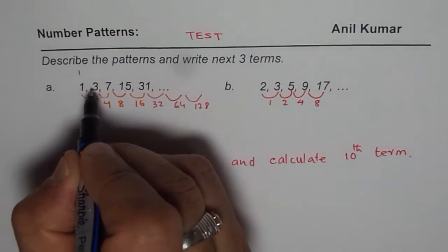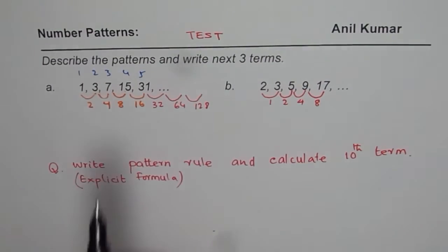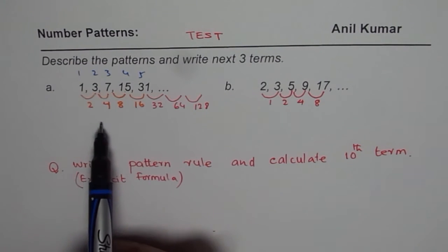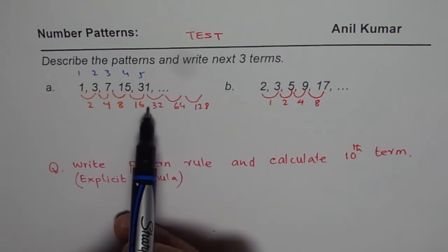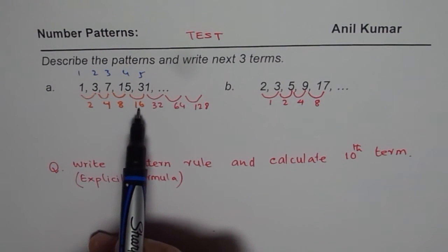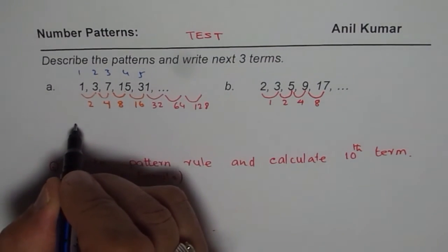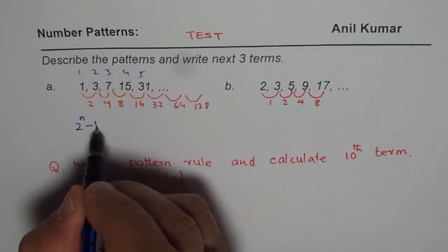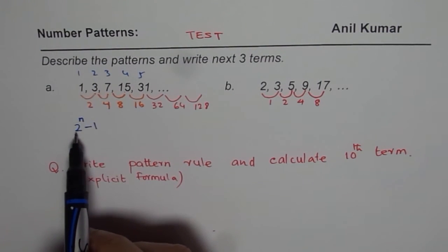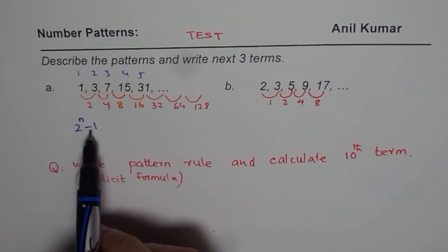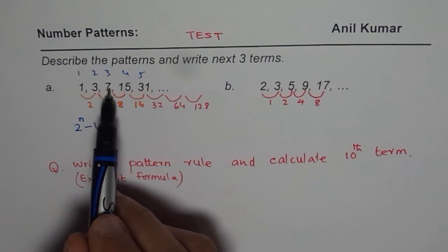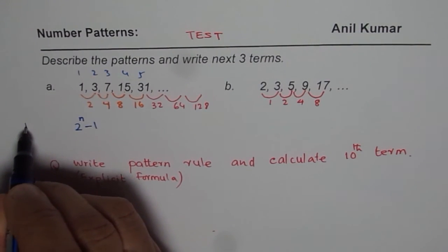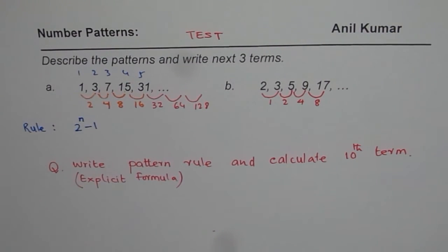Since we have two very similar patterns, I will provide a solution for the first one. Let's call these terms as term number 1, 2, 3, 4, 5, and so on. First term is 1, second term is 3, third term is 7, fourth term is 15. We are looking at a pattern where we are adding times 2 each time — first we add 2, then 4, 8, 16, and so on. So I think 2 to the power of n has something to do with it. What is 2 to the power of 1? It is 2. But how do I get 1? If I take away 1, I get 1. For the second term, if I do 2 to the power of 2, which is 2 squared, that is 4, and 4 minus 1 is 3 — correct. 2 cubed is 8, 8 minus 1 is 7 — that is correct. So the pattern rule for the first one is 2 to the power of n minus 1.